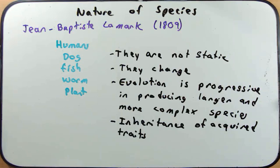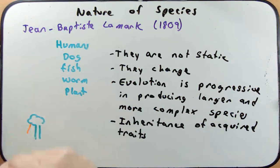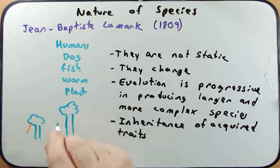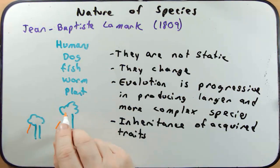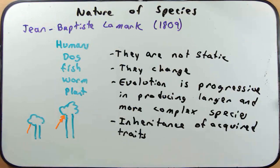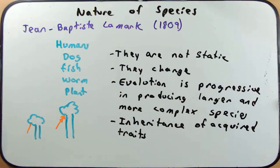He also believed in something called the inheritance of acquired traits. The classic example is the length of a giraffe's neck. If a giraffe needed to eat leaves from a tree that grew taller, it would stretch its neck over time, and by gaining the ability to stretch and have a longer neck, it could pass that trait on to its offspring — something the giraffe was intentionally doing. We now largely accept this idea to be false; the inheritance of acquired traits is not supported.